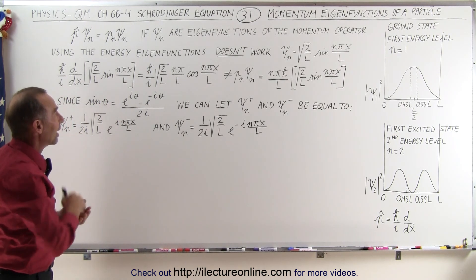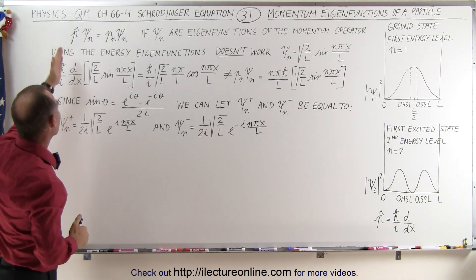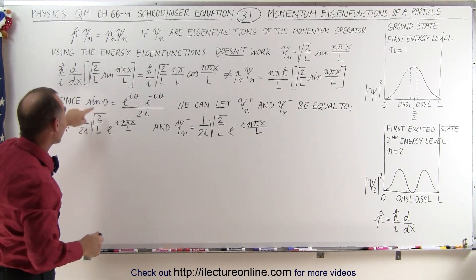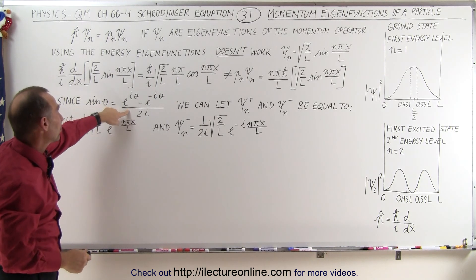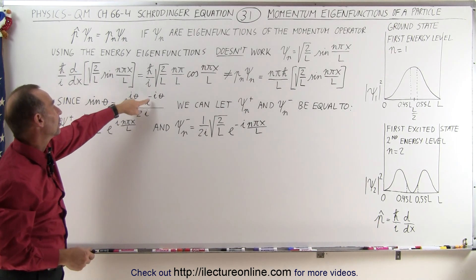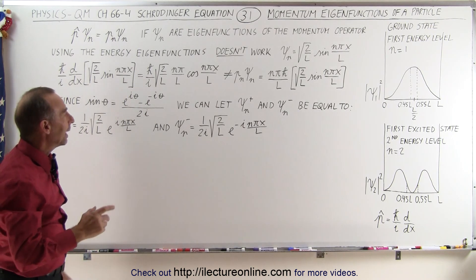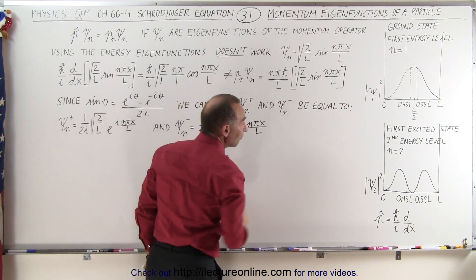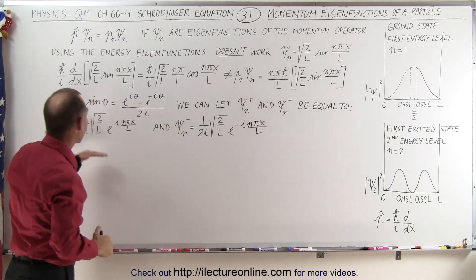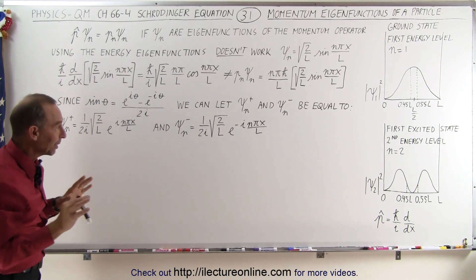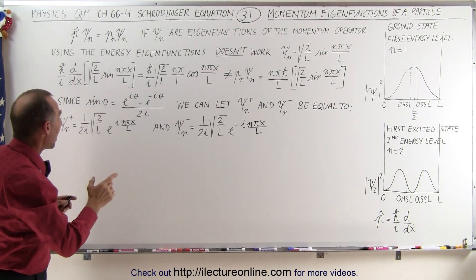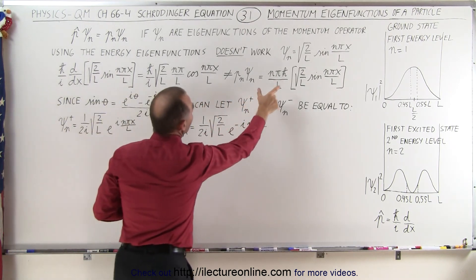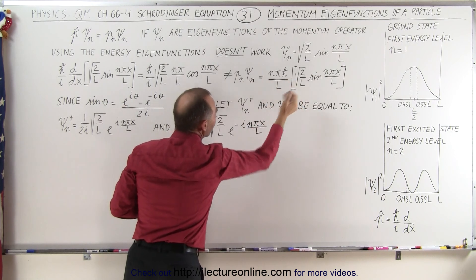Just looking at these two alone, we already know they're not going to be equal. So to have a valid momentum eigenfunction, the result must equal the eigenvalue times the eigenfunction when we operate on it with the momentum operator. If we take advantage of the concept that the sine of an angle can be written in exponential form — e to the i theta minus e to the minus i theta divided by 2i — then we can let the presumed eigenfunctions be expressed in this way.